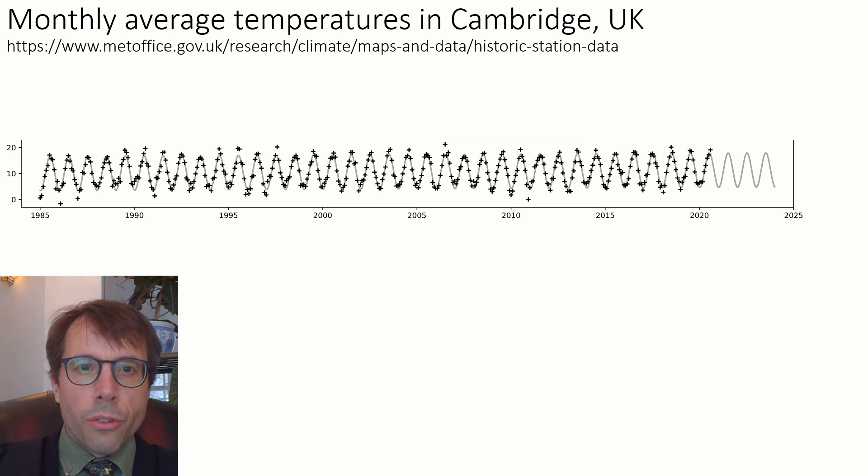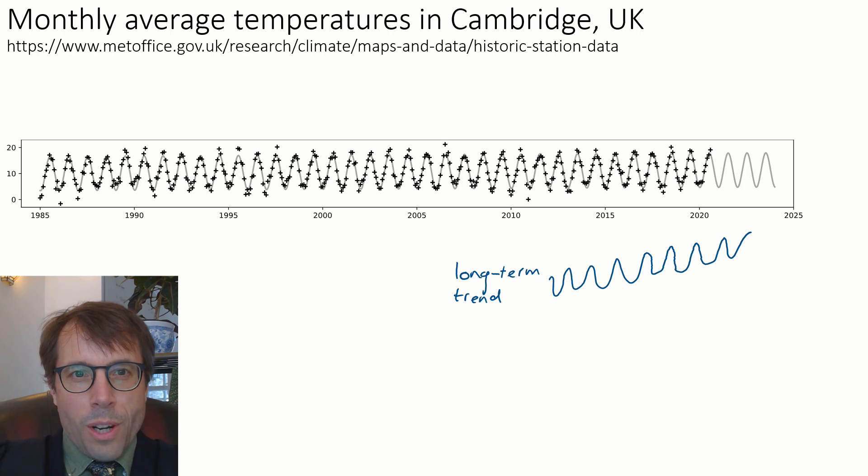Now when you see a plot like this your first instinct should be, I don't trust the model. This model is crying out for investigation. Would the model fit the data better if we allowed a long-term warming trend? Should the trend be linear or maybe warming is accelerating? Is the difference between winter and summer stable or are the extremes getting more extreme?